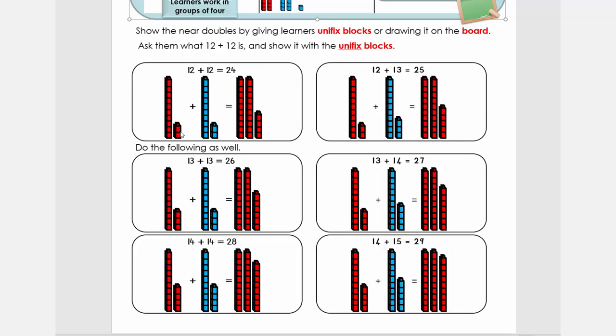So here again you can look at these examples. We got 12 and 12. If we add it together, what we have is we got a 10, a 10 and a 4. So it's 24. Here on this side is what we got near doubles. What we say is we got 12 plus 13. So what we have is we got 12 plus 12 plus 1 and we got 25.